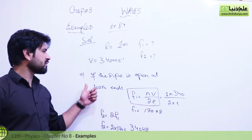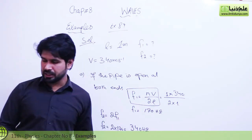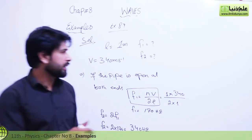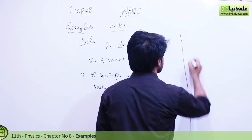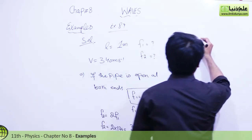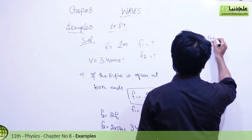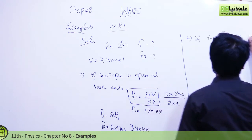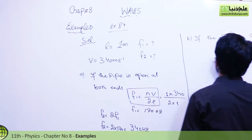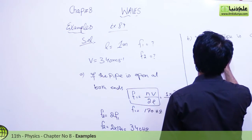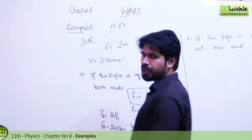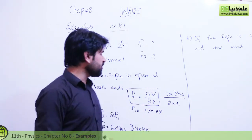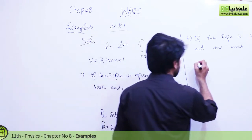This is the condition when the pipe is open at both ends. Now for the second condition, B: if the pipe is closed at one end. We know that the fundamental frequency formula for a pipe closed at one end is different.